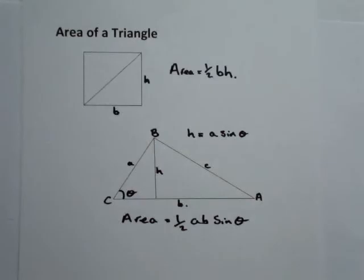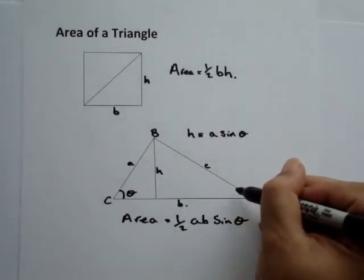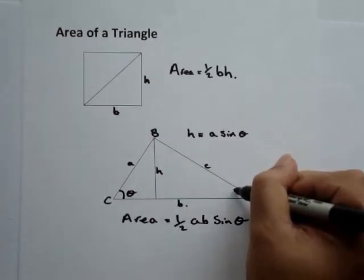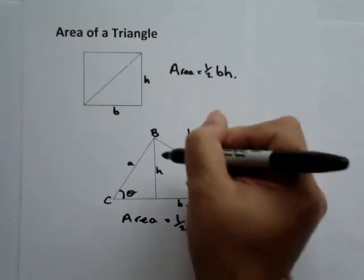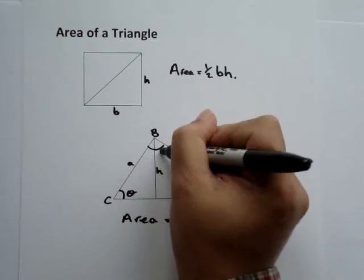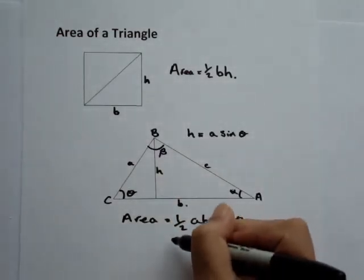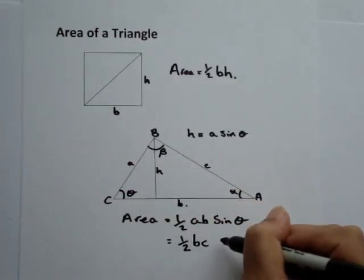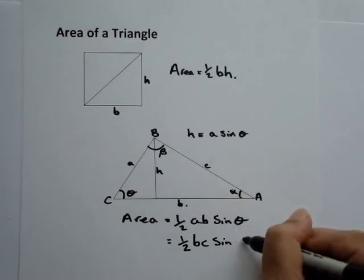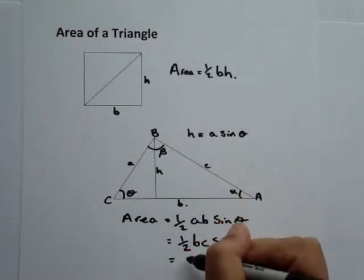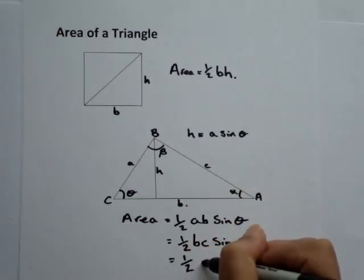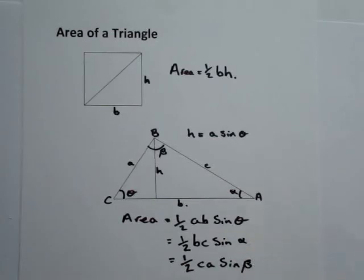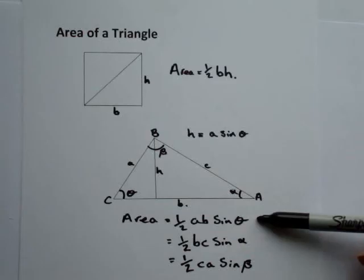Similarly, if we want to find the area using different lengths and angles: if we label this angle alpha and this as angle beta, the area is also a half BC sine alpha, and also a half CA sine beta. But mostly we'll use the top formula.